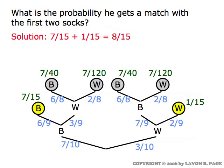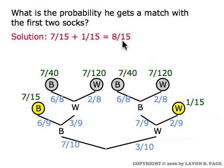The next question is: what's the probability he gets a match with his first two socks? That can happen if he gets blue followed by blue, or white followed by white. Those probabilities are 7/15 and 1/15, so the chance of getting a matching pair with just two socks is 8/15.